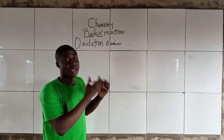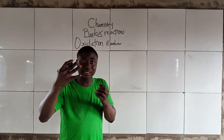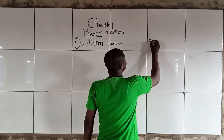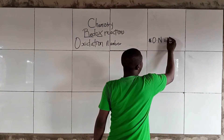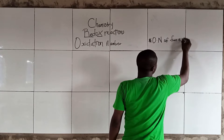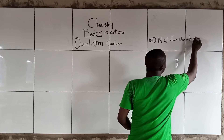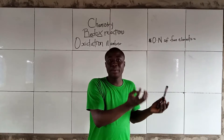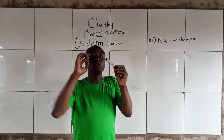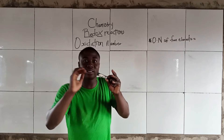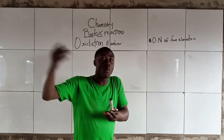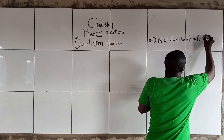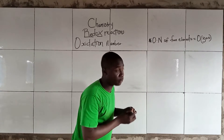Before we talk about those rules, let's take note of some points so that when we start solving, it won't be difficult. Take note that the oxidation number of free elements is zero. A free element is simply an element that is not combined with another element — it is simply an uncombined element. So, the oxidation number of free elements is zero.